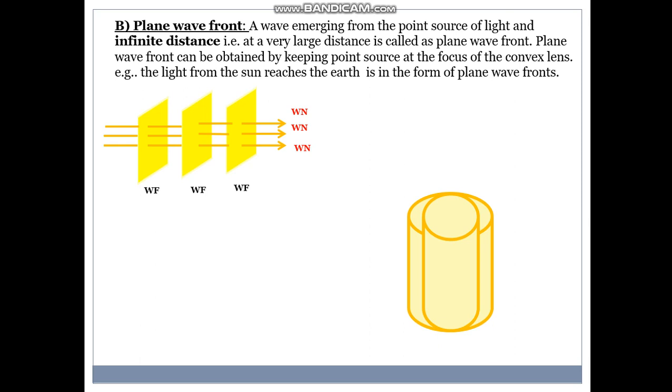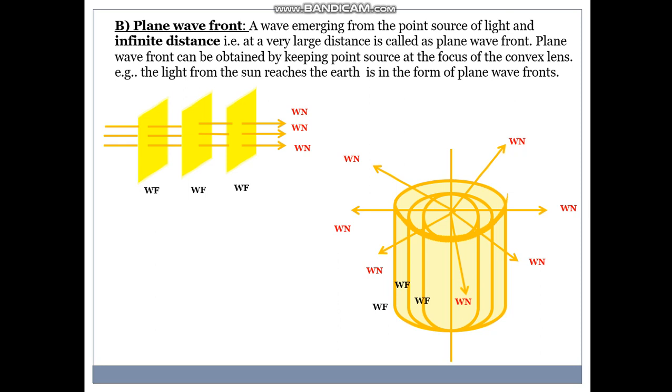Now let us take a cylinder. So it goes on. These are the wave normals. These are the wave fronts. So what is a cylindrical wave front then? A wave front originating from a linear source. That linear source is very important. Linear source of light is called cylindrical wave front. Source of light in the form of long narrow slit gives rise to cylindrical wave fronts.